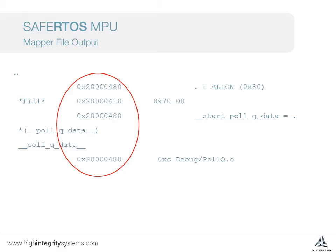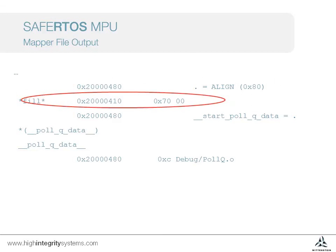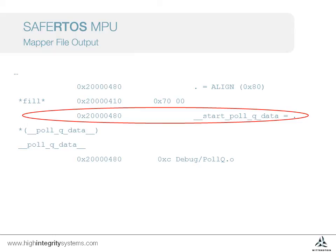The map file also shows the commands from the linker script, so we can see our align statement. To match this alignment requirement, a fill — or in other words an area of empty space — is required, as the last structure finished at an address that doesn't meet the alignment requirements. In this case, 112 bytes of space are required to align the next address to 128 bytes. The next line shows the assignment of the newly aligned address to the variable startPollQueueData. Where this is referenced in the C code — i.e. the MPU parameters for the task creation — this variable will have the value 0x20000480.